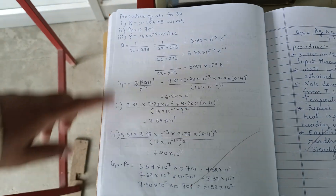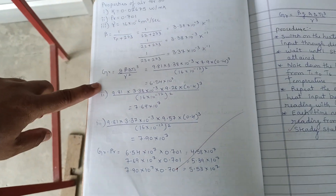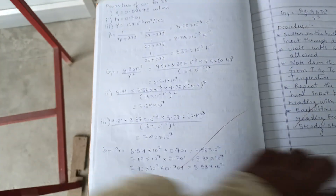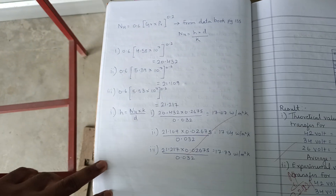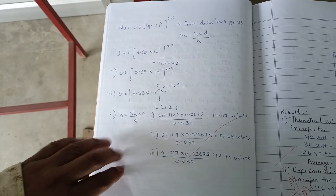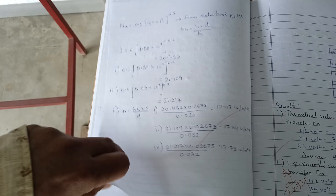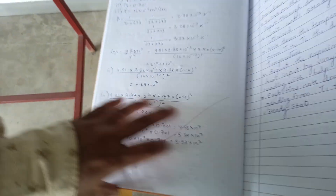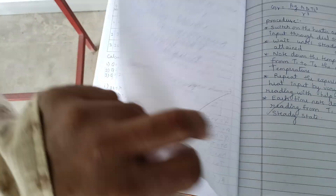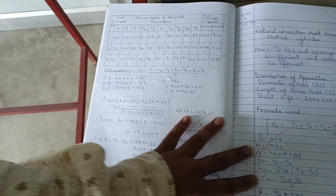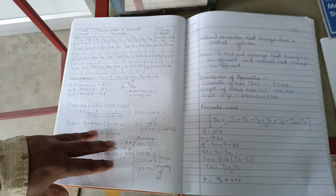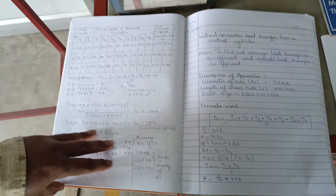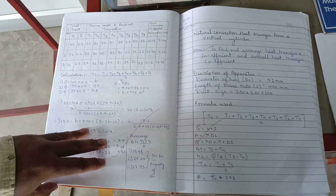A model calculation is shown here for a particular reading, demonstrating the way of doing the calculation and the final solution. Everything will be provided in the manual so students can follow it and work out easily. This experiment helps understand heat transfer concepts, specifically the mode of natural convection. Thank you.